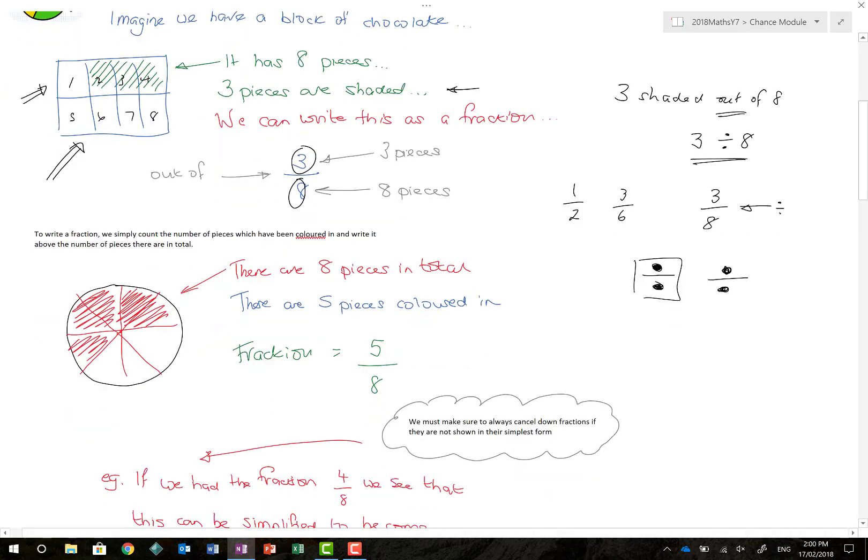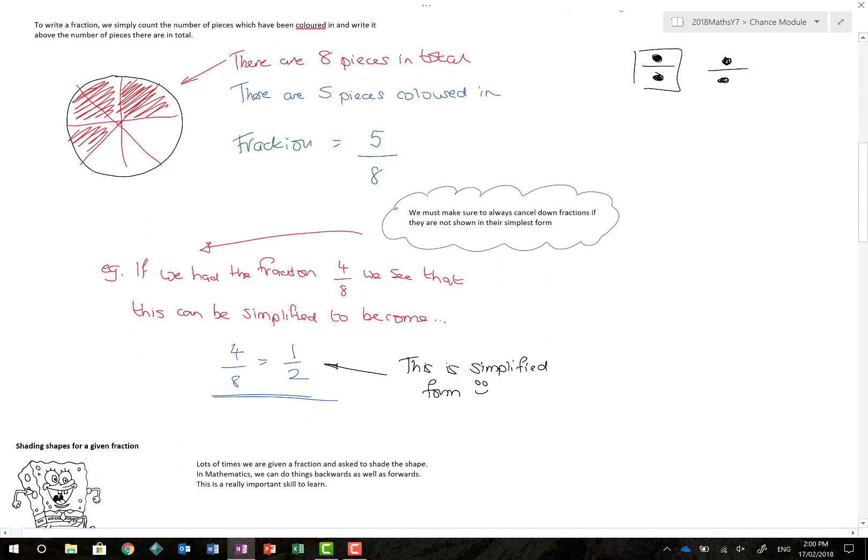Now, we might not have blocks of chocolate. As you can see here, I have now got eight pieces, but this time in my second favorite meal of all time, that's pizza. How many pieces have we got? One, two, three, four, five, six, seven, eight pieces of pizza. And in this situation, how many pieces are colored in, or how many am I going to eat? Actually five. So we can write our fraction as five over eight.